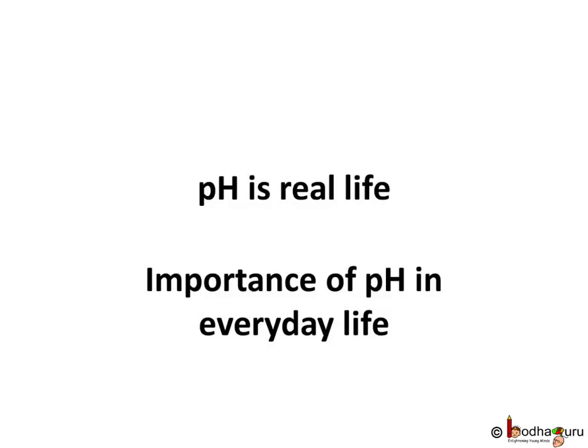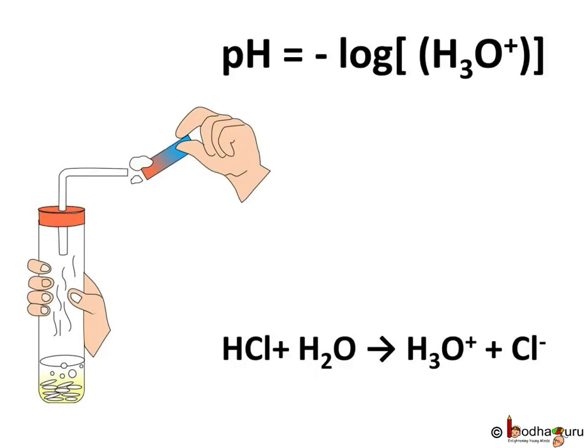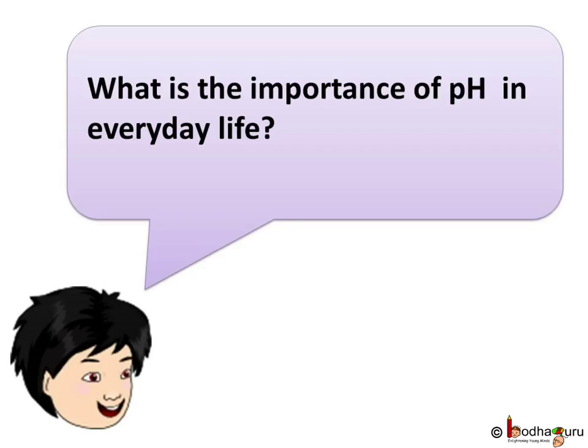Hello everyone. In our previous lesson we understood what pH is, and that low pH means high hydronium ion concentration in solution, while high pH means low hydronium concentration in the solution. So what is the importance of pH in everyday life?